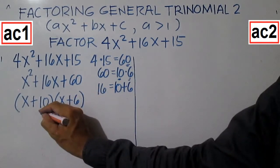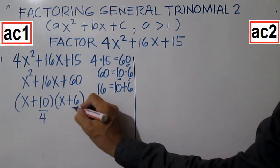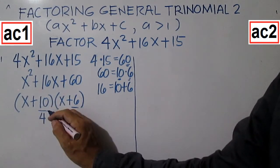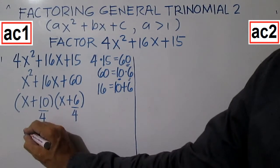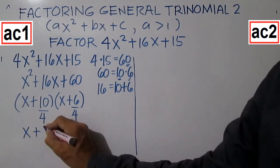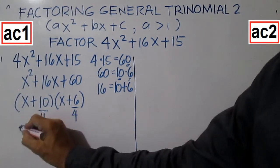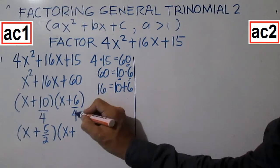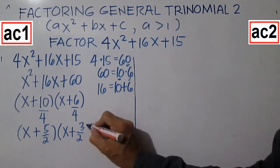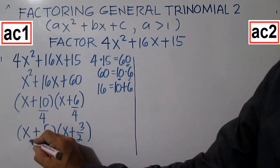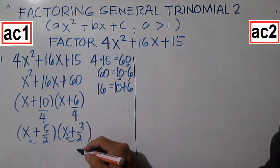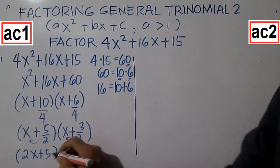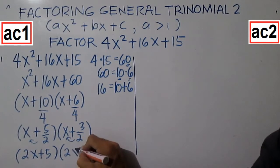Divide X by 4 and 6 by 4 also. Simplify by 2: you have X plus 5 over 2. The other factor is X plus 3 over 2. Then multiply the denominator back to X. The factors are 2X plus 5 and 2X plus 3.